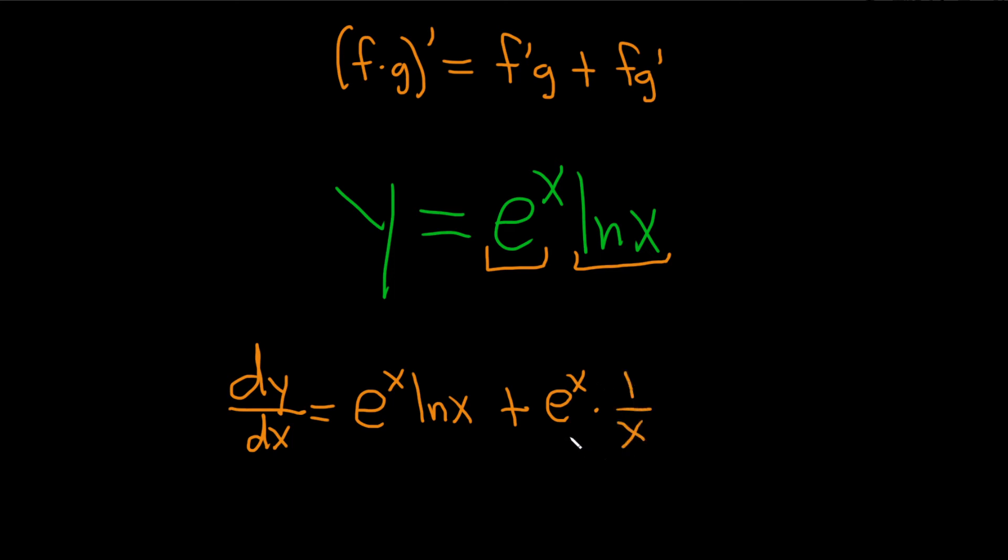That's pretty much it. Let's just double check our work. The derivative of the first is e to the x times the second plus the first times the derivative of the natural log of x, which is 1 over x. That's pretty much it. That'll be good. I'll just leave it just like that.